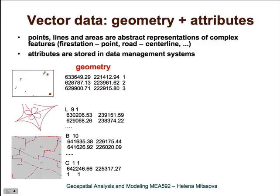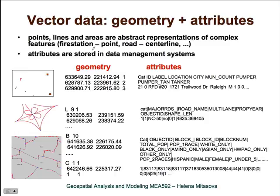In addition to geometry — for points, lines, and areas — the vector data model also includes attributes, and the attributes are stored in data management systems. For example, if these are fire stations, here are the attributes of the fire station, and they are usually linked to the geometry through its category. Here is the line, and the attributes are assigned to the line based on the category.